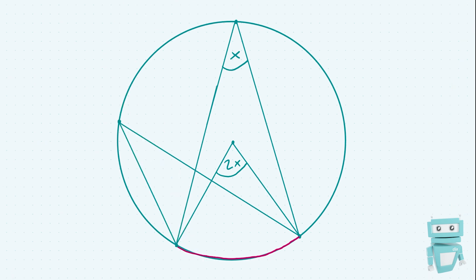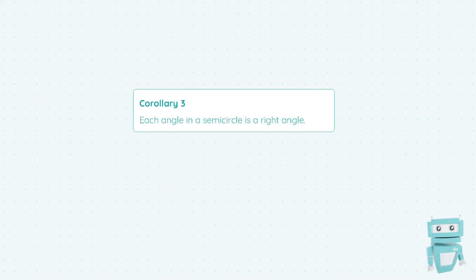To demonstrate that visually, as you can see we've drawn another angle connecting the same two points of the arc to another point on the circle, and this angle is also the value x. So all this corollary means is that it doesn't matter where we position this angle on the circle — it's going to be half the value of the angle at the centre.